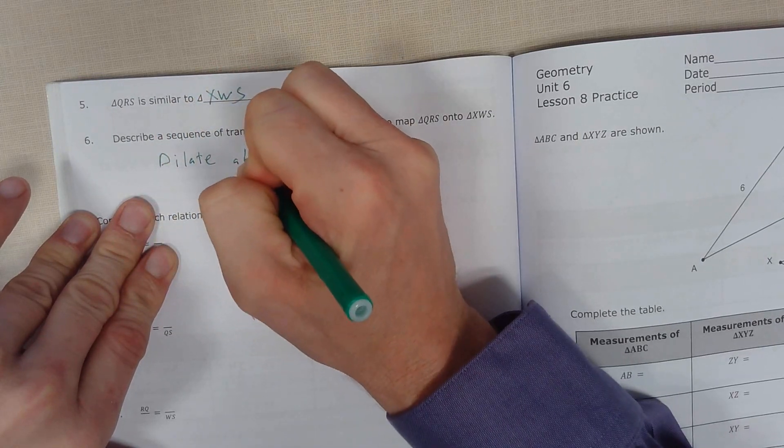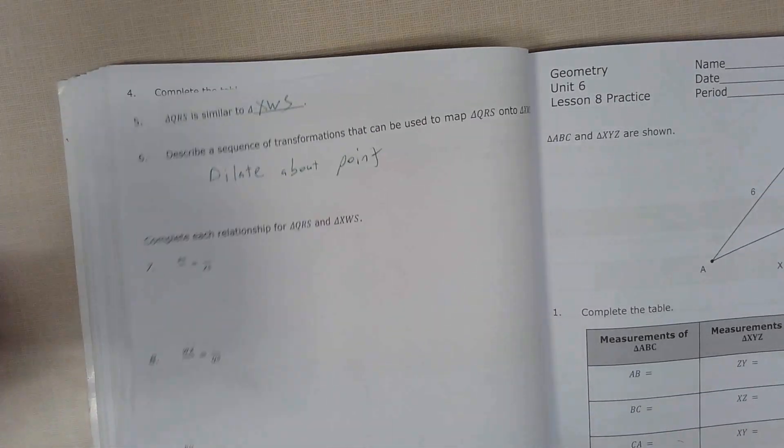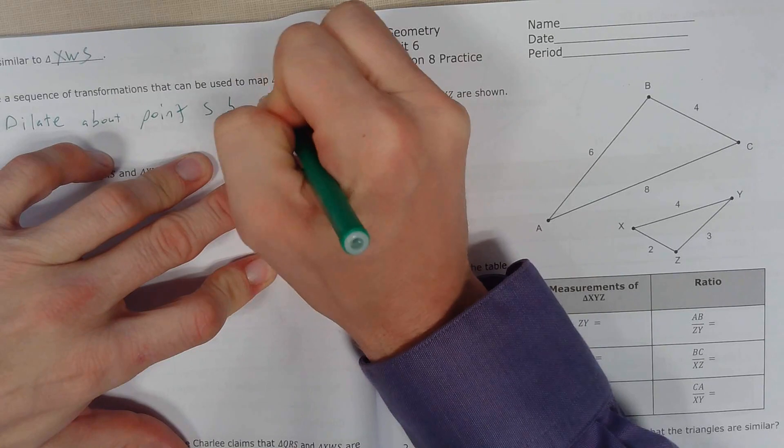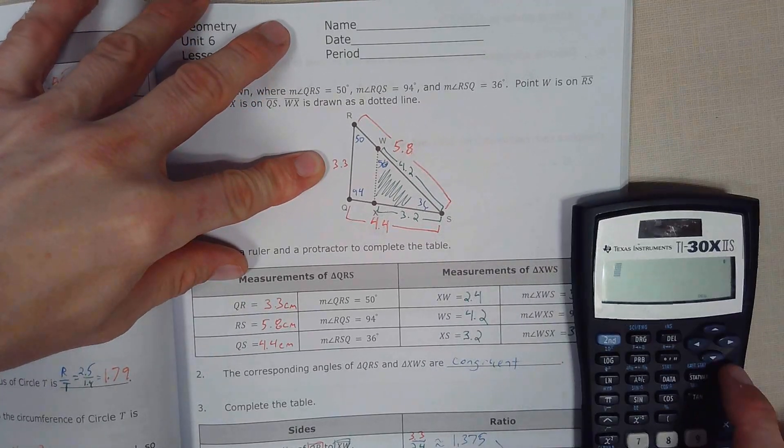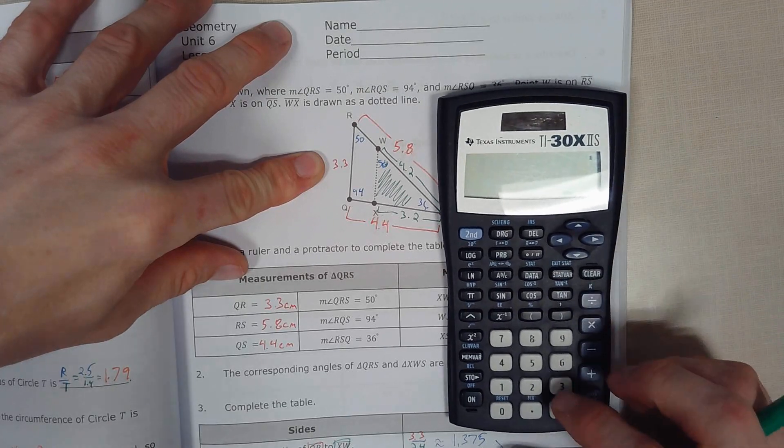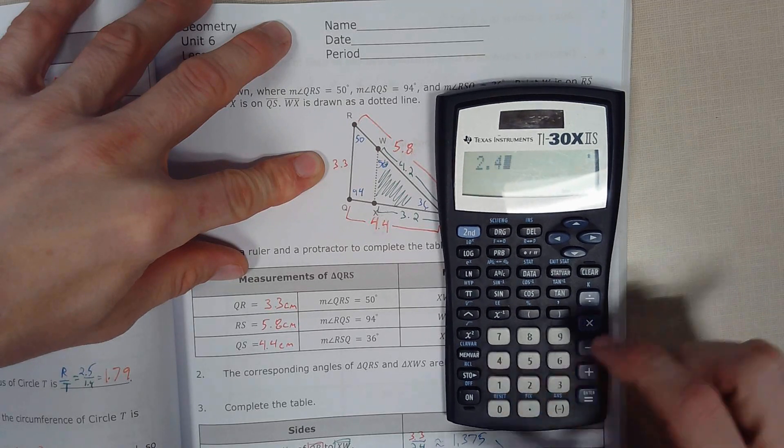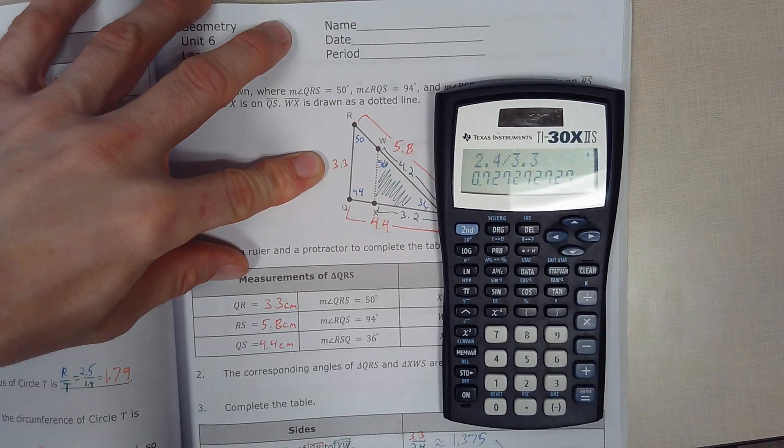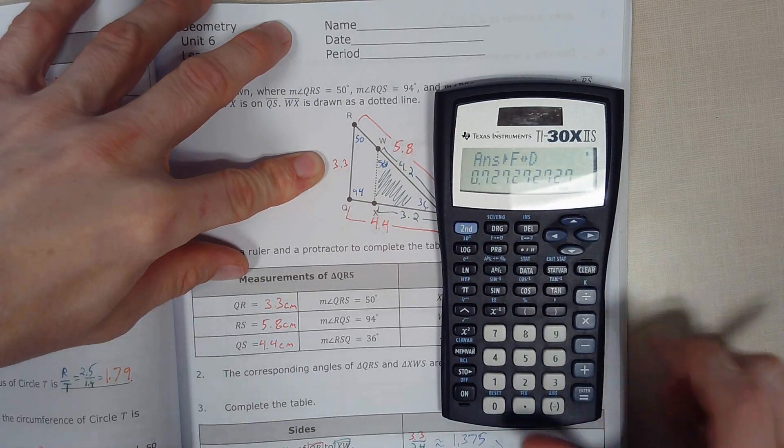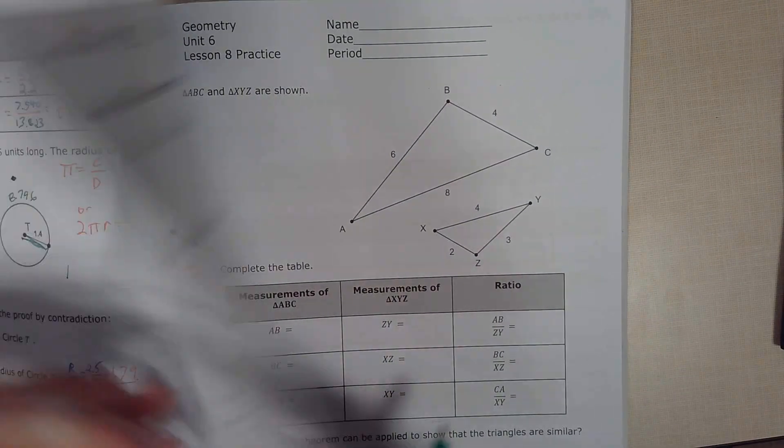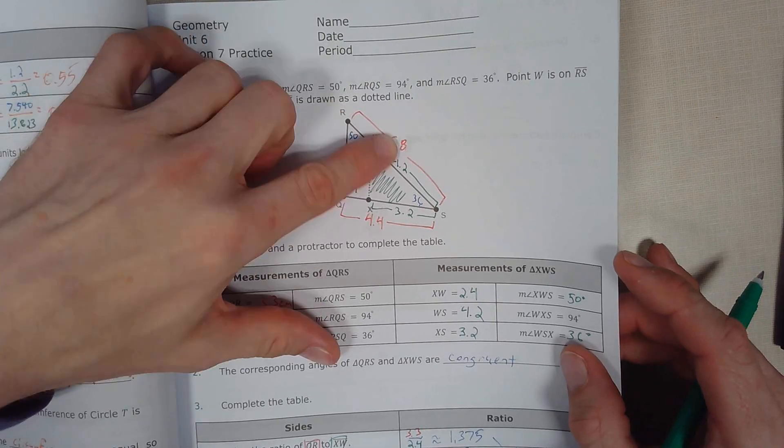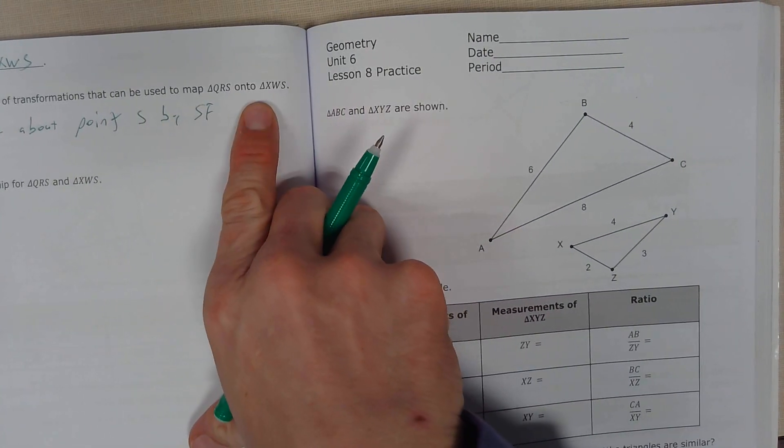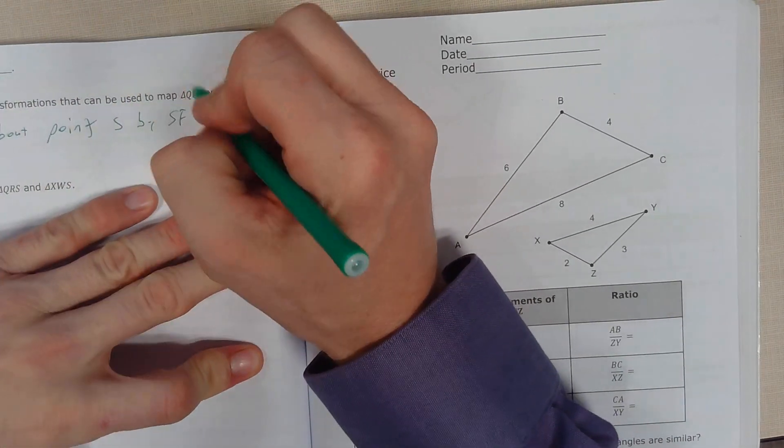Dilate about point S, just going to shrink it, by a scale factor. Let's figure out a scale factor here. 2.4 divided by 3.3, that's like 0.72. Maybe eight elevenths. My scale factor of eight to eleven. Map QRS onto XWS, so it's going to be shrinking it, so it's going to be eight to eleven.